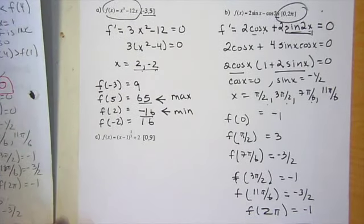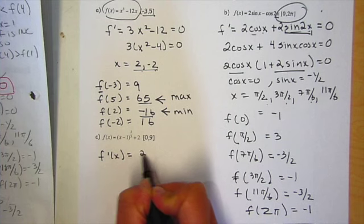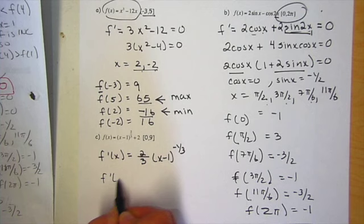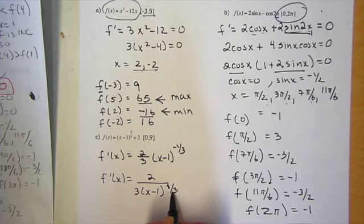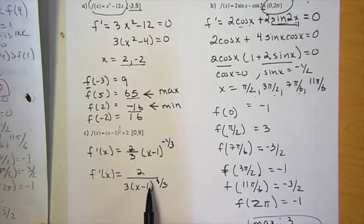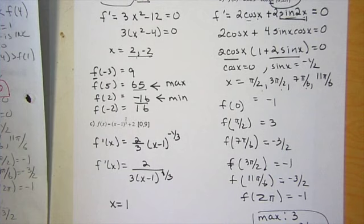Okay. One last example here. Same thing. Start with my derivative. So bring down the 2 thirds. Reduce the power by 1. And now this is where you need to simplify. So I'm going to drop that down. So there's no place where the derivative is equal to 0, but there is a place where the derivative does not exist. It's whatever makes the bottom 0. So my critical number is only at x equals 1.